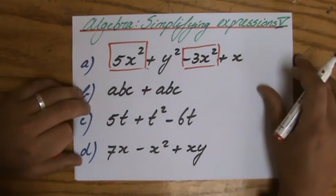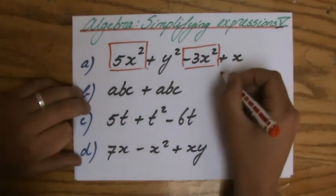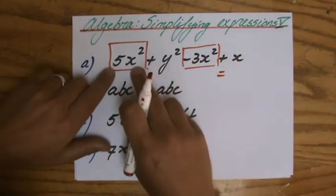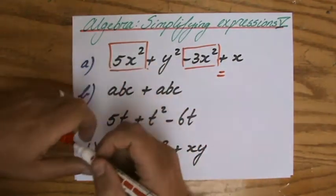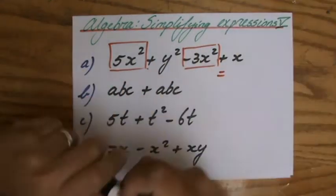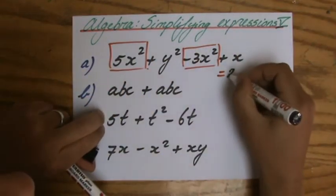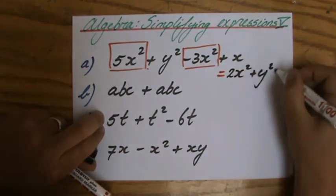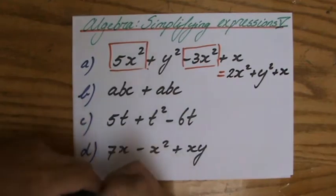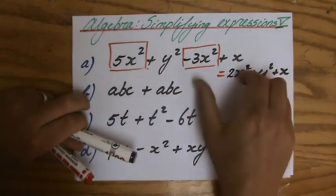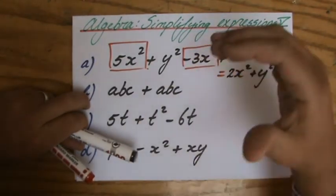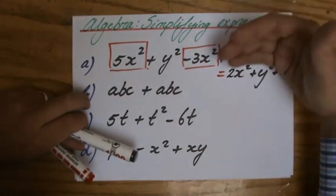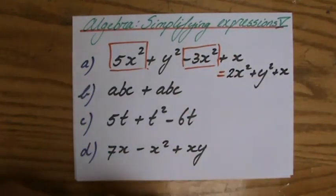They are unlike compared to the x². So if I simplify that, 5x² minus 3x² will be 2x², and then I have y² and x left. Please note you can write this in any combination—you could also say x plus y² plus 2x².